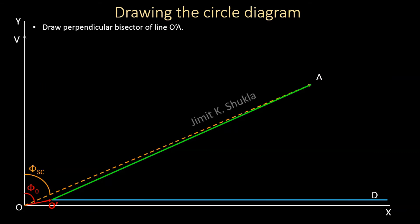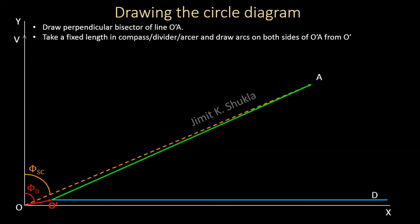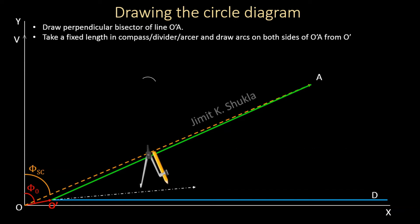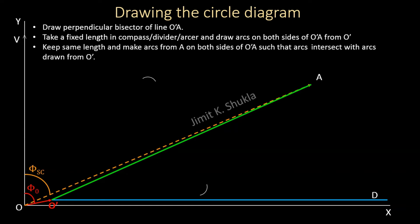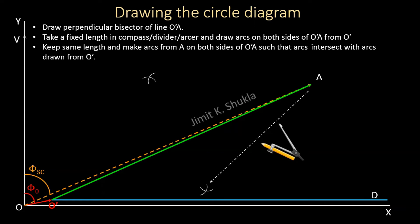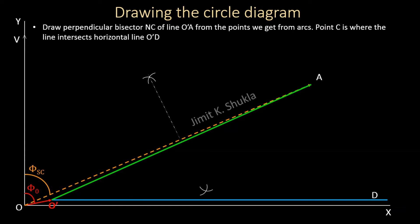Now we draw the perpendicular bisector of line O'A. Using a compass or divider set to a fixed length, we draw arcs on both sides of O'A — first from O', then from A — such that the arcs intersect each other on both sides. The line joining the two arc intersections is the perpendicular bisector of O'A.